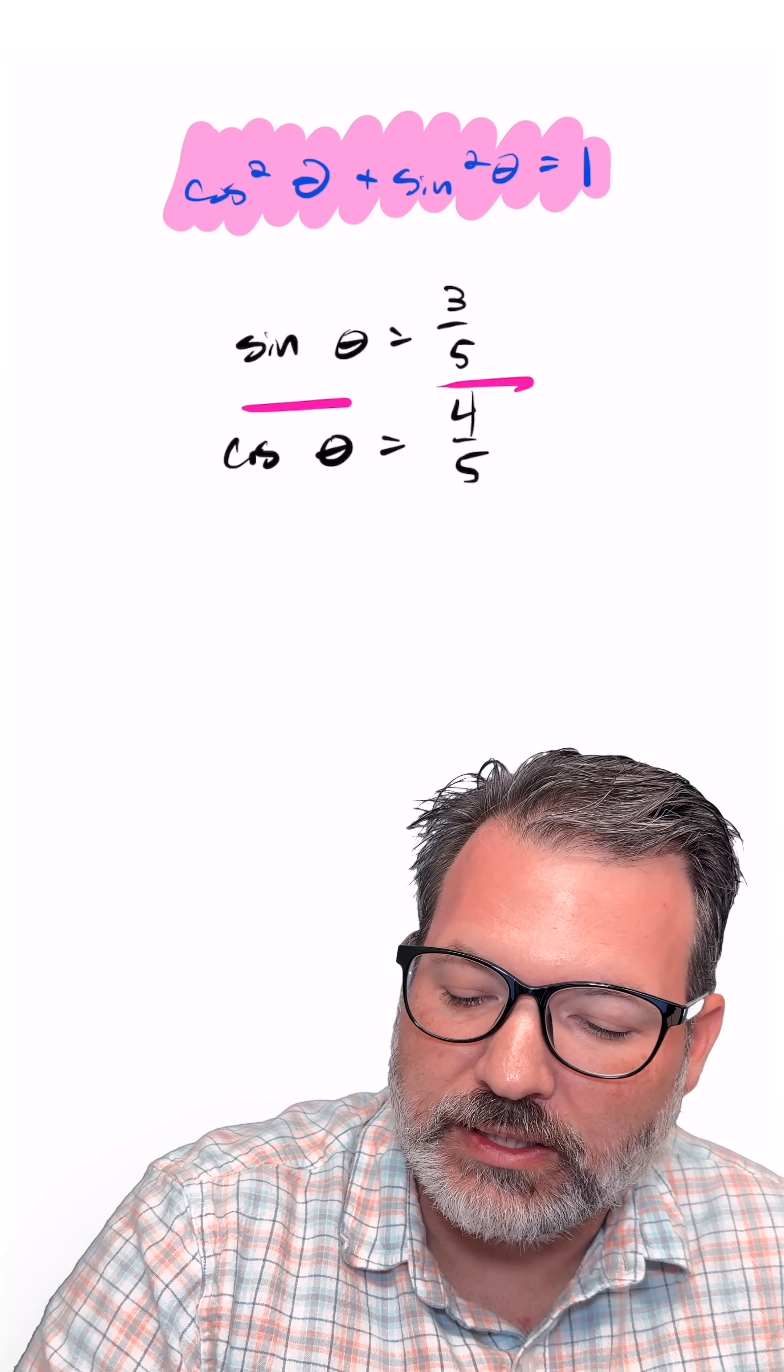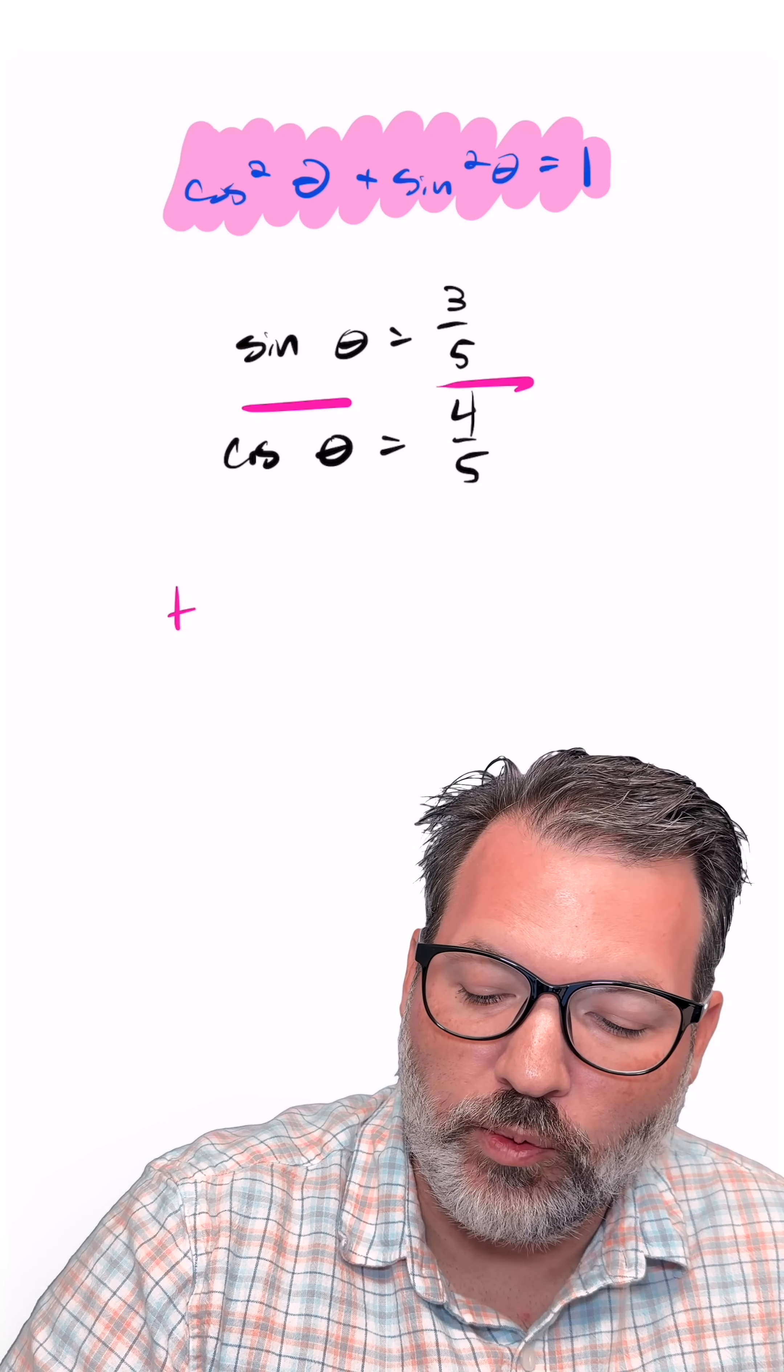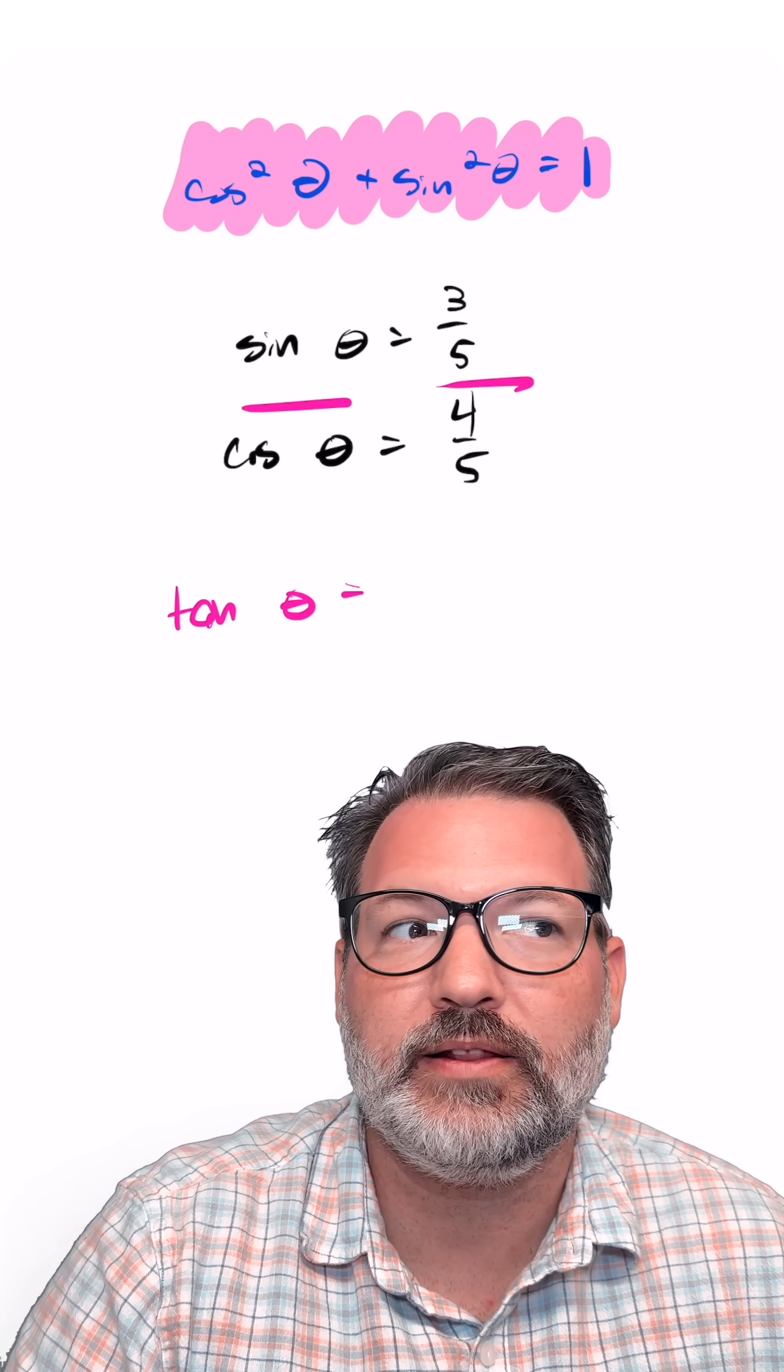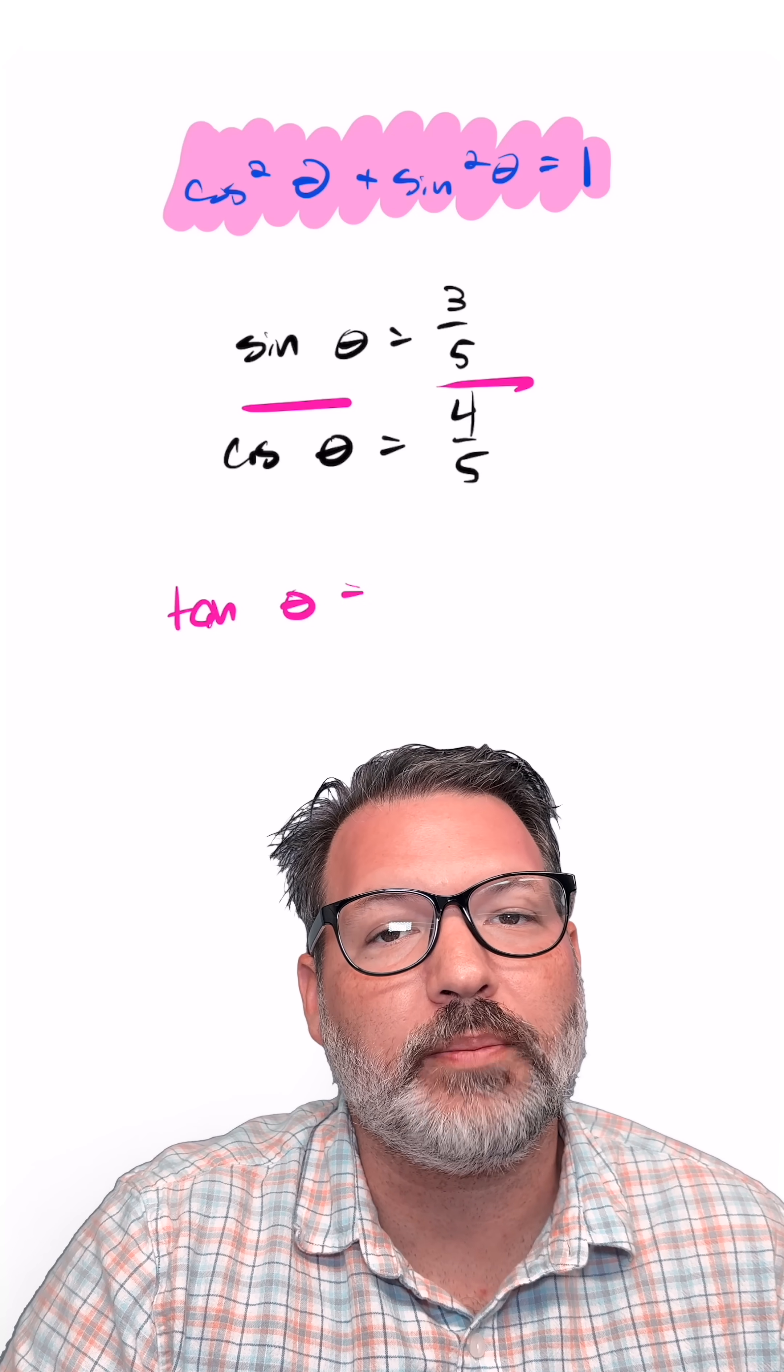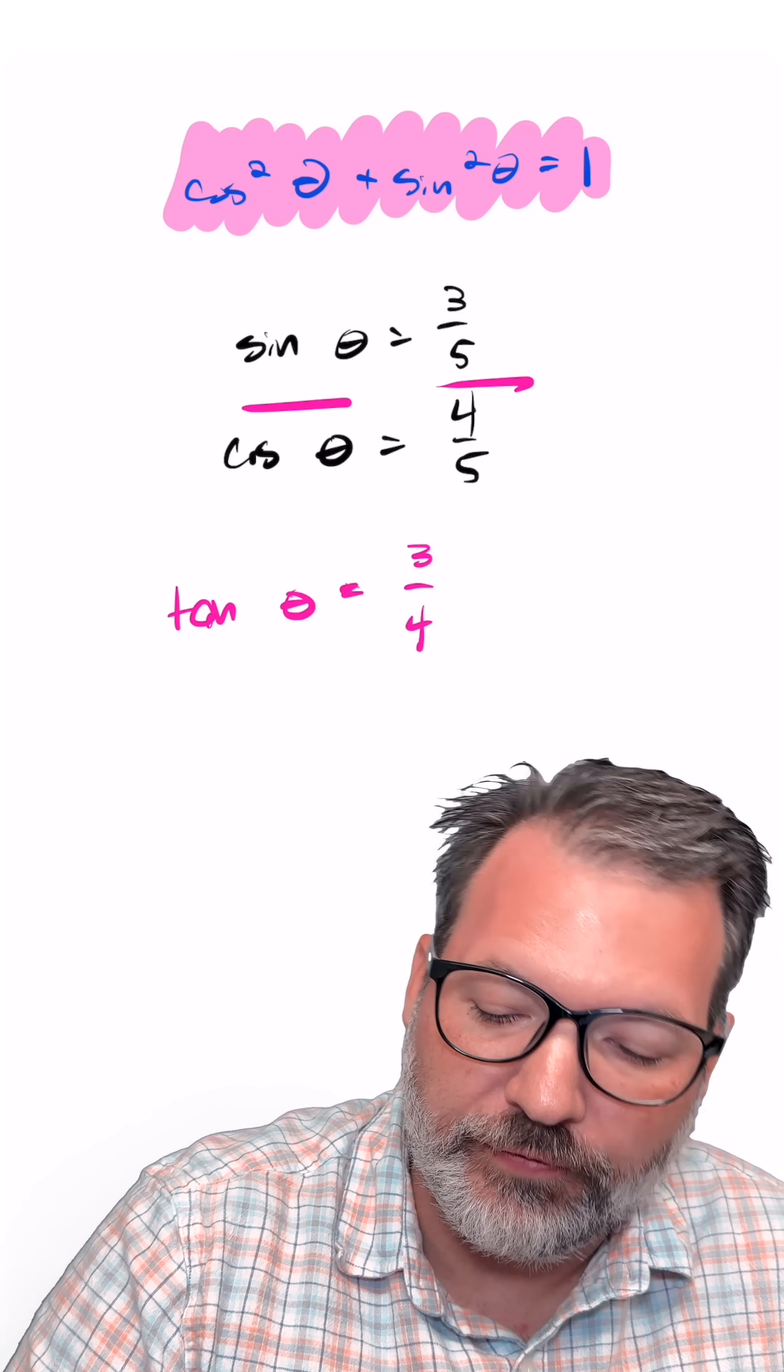Recall that tangent theta is literally just the ratio of sine to cosine. And so if we want to know this particular tangent theta, all we're going to do is divide that 3 fifths we got back for sine of theta by the 4 fifths we got back for cosine of theta. And that's going to give us a result of 3 fourths.